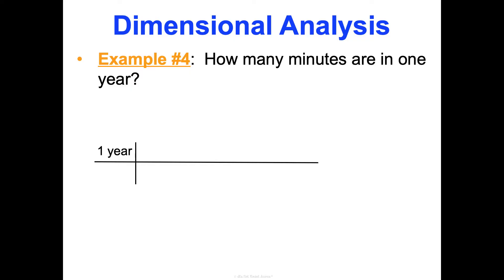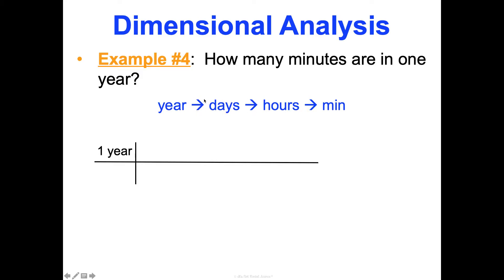Now let's make a plan. You may not know how many minutes are in a year off the top of your head, but here's what we do know: how many days are in a year, how many hours are in a day, and how many minutes are in an hour. So the plan is: years → days → hours → minutes. Counting those arrows gives us three conversion factors, so we'll need three sections in the picket fence.